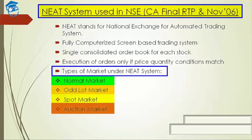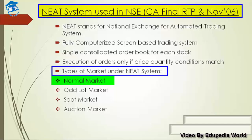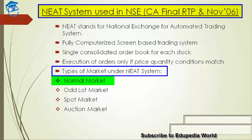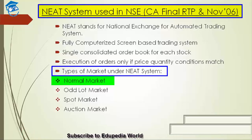In the normal market, it consists of various books where orders are segregated as regular lot orders, special term orders, negotiated trade orders, and stop loss orders depending on the time and attributes of your order. Orders of regular lot size or multiples thereof are traded in the normal market. In respect of compulsorily dematerialized shares, the market lot is one share.